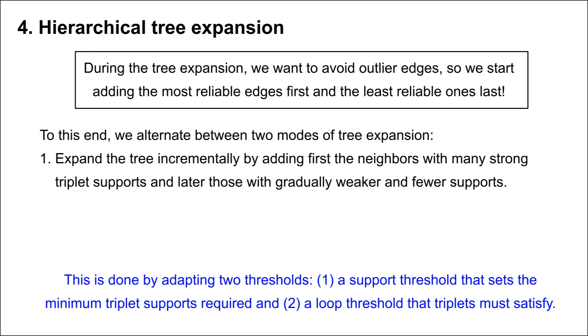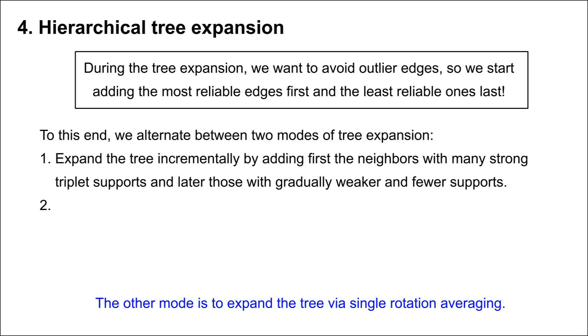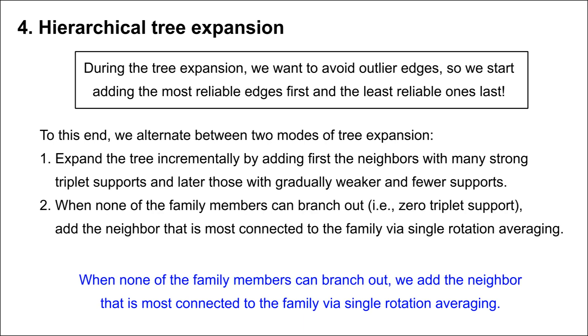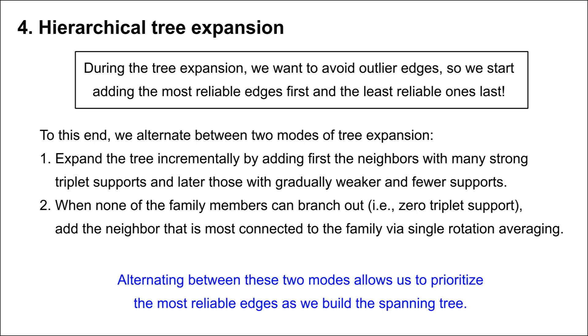This is done by adapting two thresholds: one, a support threshold that sets the minimum triplet supports required, and two, a loop threshold that triplets must satisfy. The other mode is to expand the tree via single rotation averaging. When none of the family members can branch out, we add the neighbor that is most connected to the family via single rotation averaging. Alternating between these two modes allows us to prioritize the most reliable edges as we build the spanning tree.